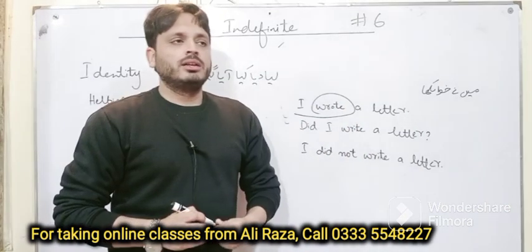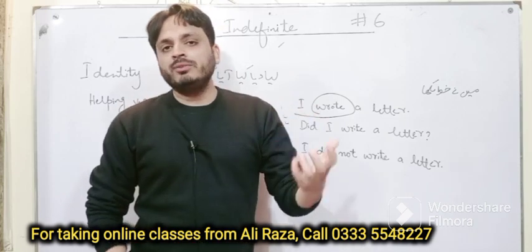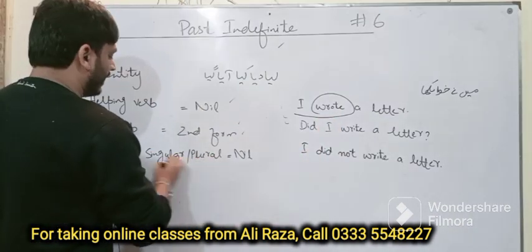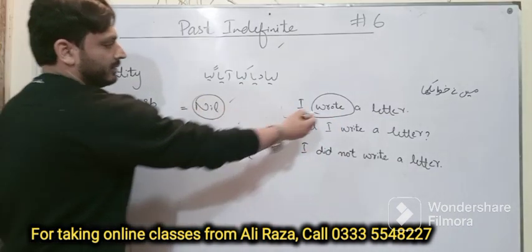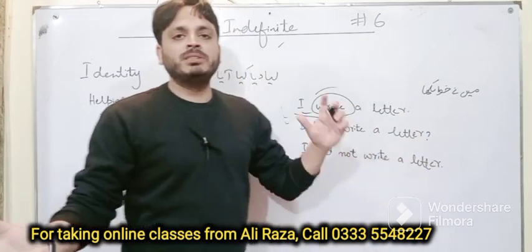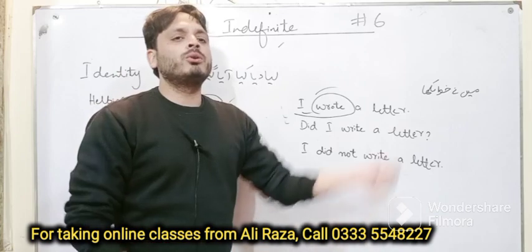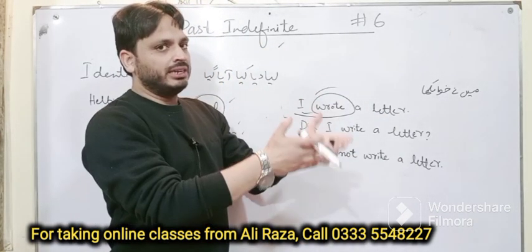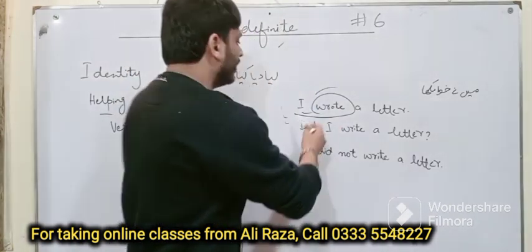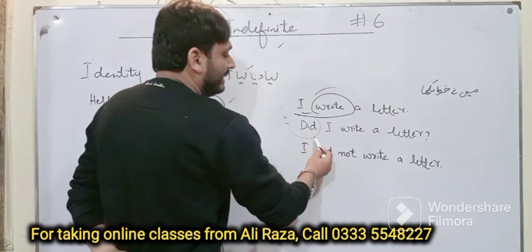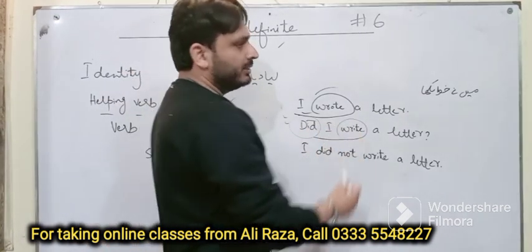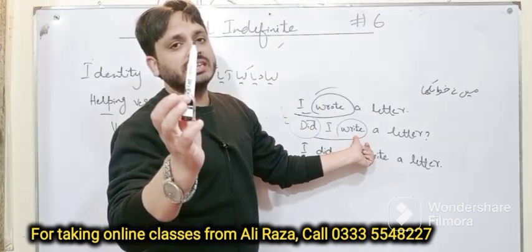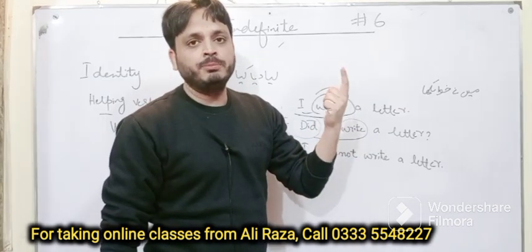An important point: for making interrogative and negative, you always need a helping verb which you bring to the start of the sentence. But here, as mentioned, we don't have any helping verb — in 'I wrote a letter' there is no helping verb. So we have to borrow another helping verb, which is 'did.' And 'did' is already the second form of 'do.' Once you put 'did,' after that you have to use only the first form of verb. For example, 'I wrote a letter' becomes interrogative: 'Did I write a letter?' — not 'did I wrote a letter,' which would obviously be a blunder.